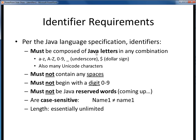Identifiers must be composed only of certain allowable characters, which for our purposes consist of the letters A through Z in both upper and lower case, numbers, underscores, and perhaps the dollar symbol. We can also use many other Unicode characters, but we won't really get into that too much.